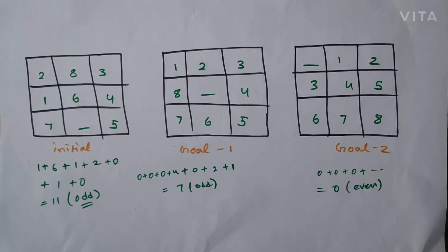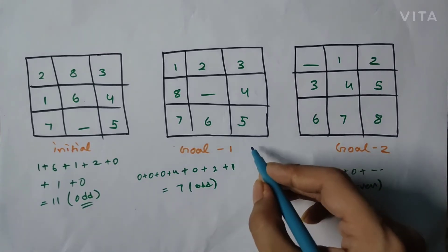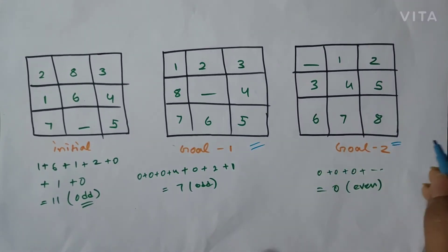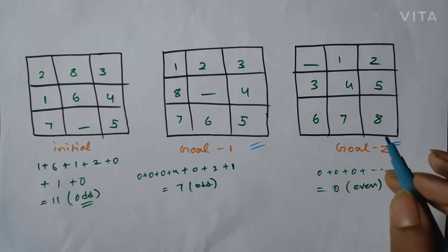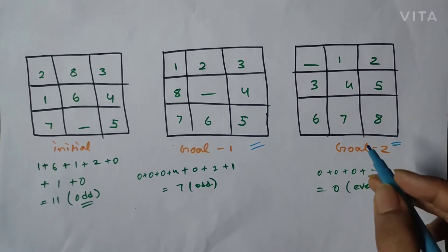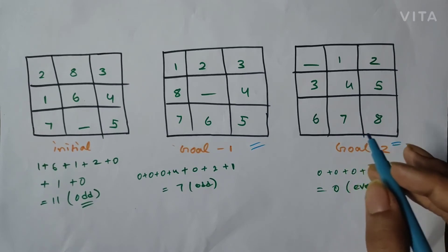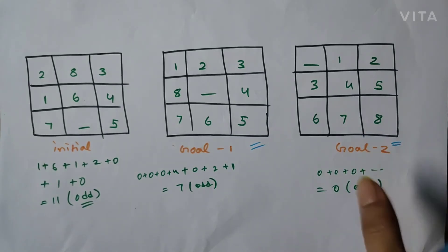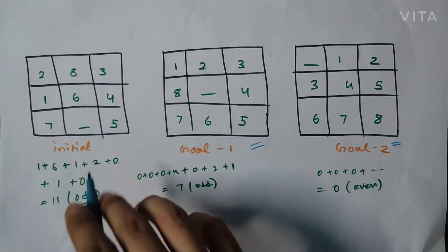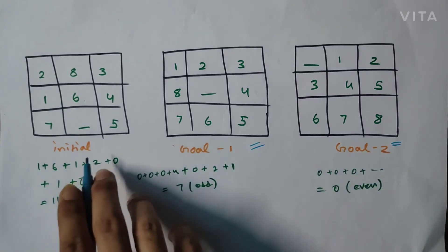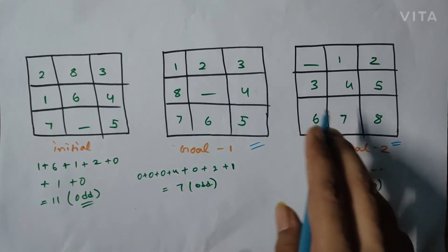In the last two problems the standard state was our goal state, but it is not mandatory that 1, 2, 3, 4, 5, 6, 7, 8 must always be the goal state — any state can be our goal state. So let us take a generalized example. We are given an initial state with two possible goal states, and we will see whether the initial state can reach either of them.